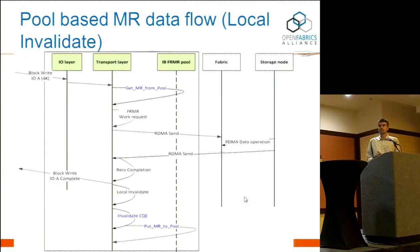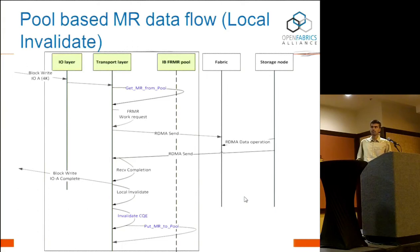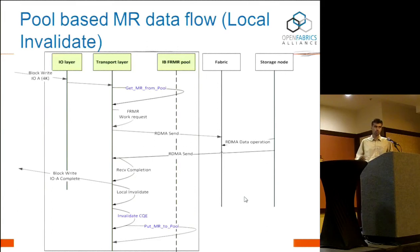The local invalidate is an interesting case. When you issue a local invalidate, you have to wait for the CQE completion to come back. Otherwise, on that queue pair, you don't know whether the local invalidate is complete or not. If the local invalidate is in progress and you add the memory region back to the pool just because you issued the local invalidate, it's likely to cause a race condition where another queue pair picks up that MR and starts using it. So when we do a local invalidate, you can put the entry back into the L1 cache for reuse, because all operations are in order on a given queue pair. But you cannot put those entries back into an L2 cache or global pool until the completion arrives.